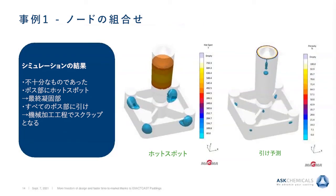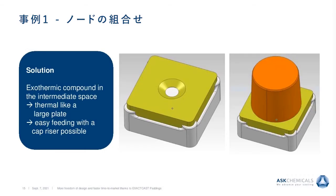The simulation result with standard risers is unsatisfactory. On the left you can see the hot spot of the casting — the residual melt areas where the last solidification takes place — and on the right, the corresponding porosity. You can see that in all the bosses there is porosity. The problem is that these bosses often contain threads or holes, so during machining these porosities are opened, and the parts are mostly seen as scrap.